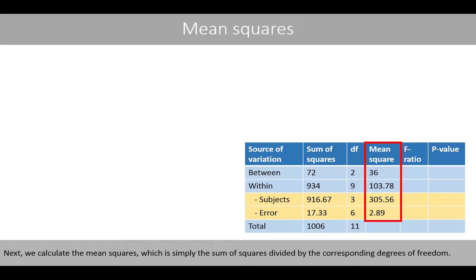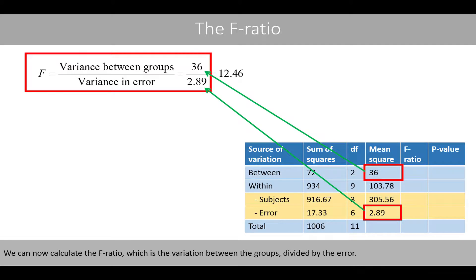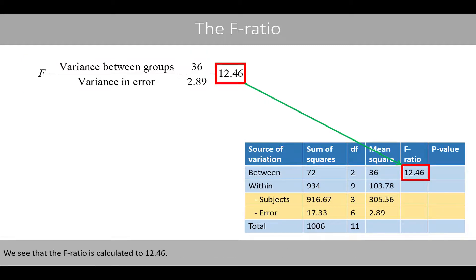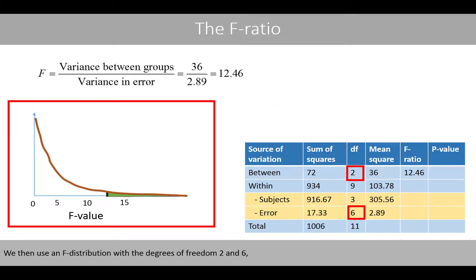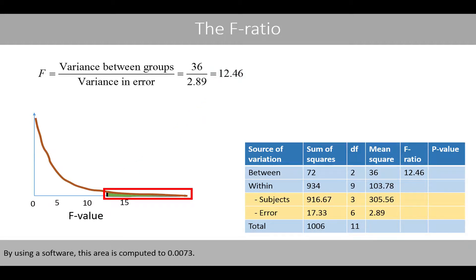Next, we calculate the mean squares, which is simply the sum of squares divided by the corresponding degrees of freedom. For example, the mean square between groups is 72 divided by 2, which is 36. We can now calculate the F-ratio, which is the variation between the groups divided by the error. We see that the F-ratio is calculated to 12.46. We then use an F-distribution with the degrees of freedom 2 and 6, and calculate the area to the right-hand side of 12.46. By using software, this area is computed to 0.0073.